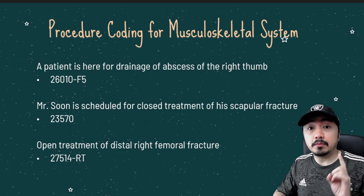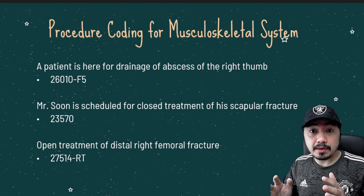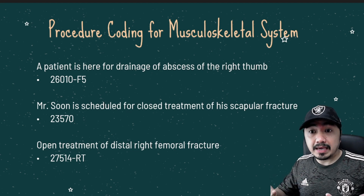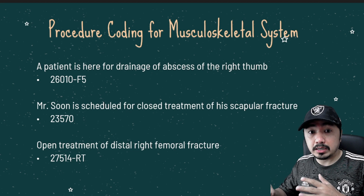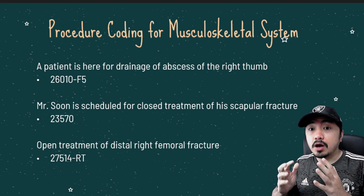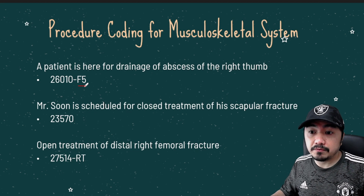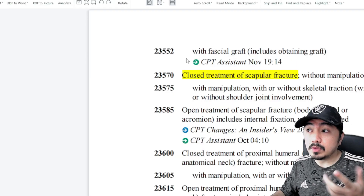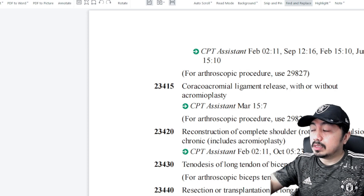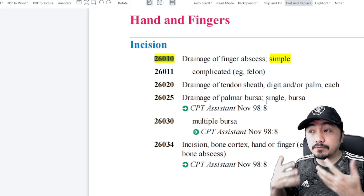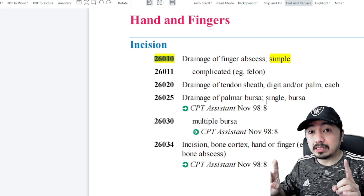For procedure coding for the musculoskeletal system, most codes are in the 20000 series of the CPT book, while some codes are found in HCPCS Level 2 for devices and equipment such as wheelchairs, canes, and walkers. Laterality is very important in CPT coding as well. In the first scenario, modifier F5 is used because the drainage of abscess was performed on the right thumb. Code 26010 covers drainage of abscess of the finger, simple.